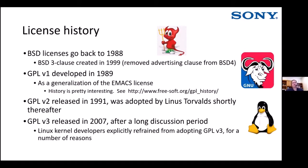Looking at license history: BSD licenses came into effect around 1988. GPL version 1 came out in 1989 and was a generalization of the Emacs license that Richard Stallman had been applying to GNU project software. GPL v2 was released in 1991 and was adopted by Linus Torvalds. GPL v3 came out in 2007 after a long discussion period — there were some perceived flaws in GPL v2. For a variety of reasons, including not agreeing with some of the intent behind it, GPL v3 was never adopted by the Linux kernel.